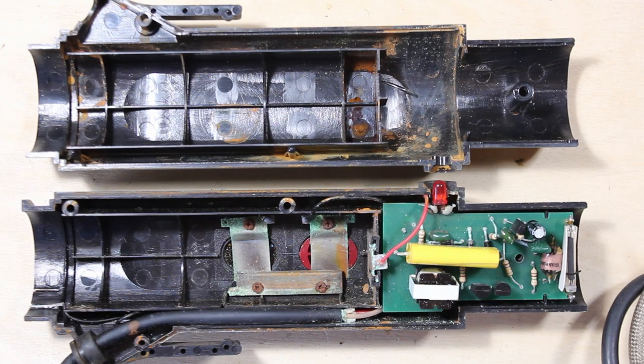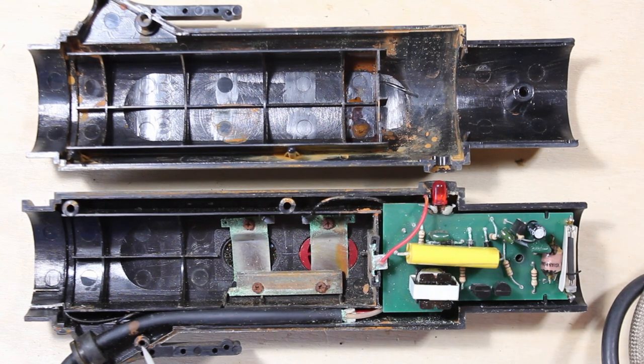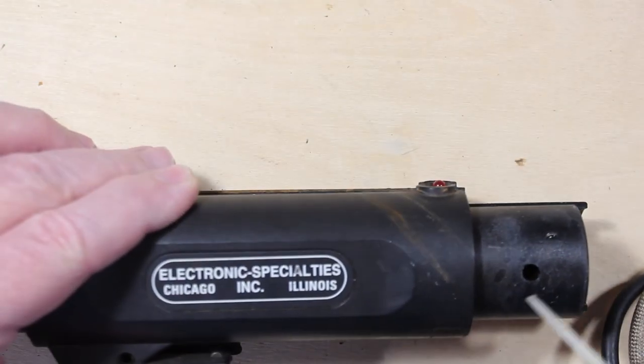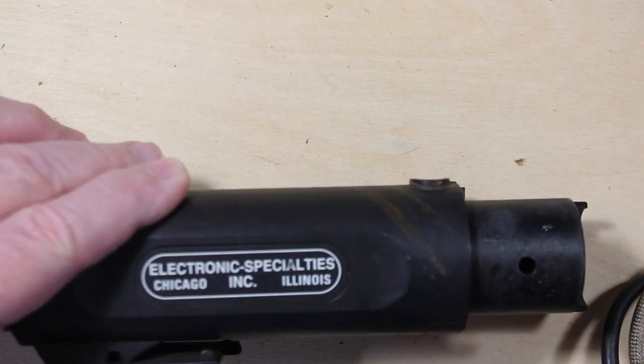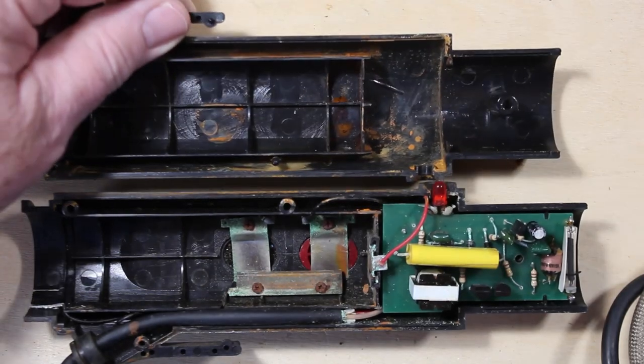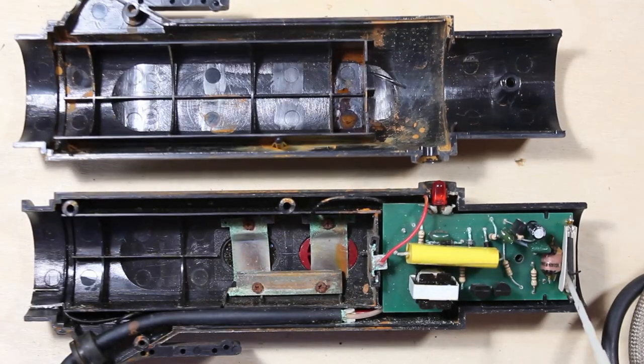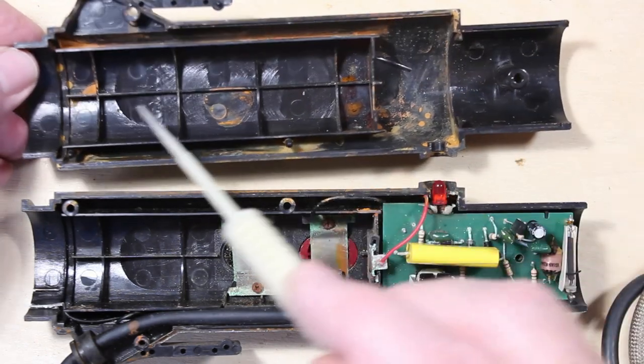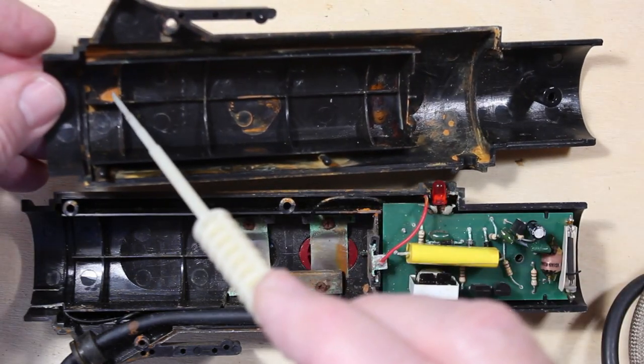Only two screws to get this thing apart. We can see the xenon flash tube up here and the amount of water that was in this thing once upon a time. It looks like it's dried in the corners down here.